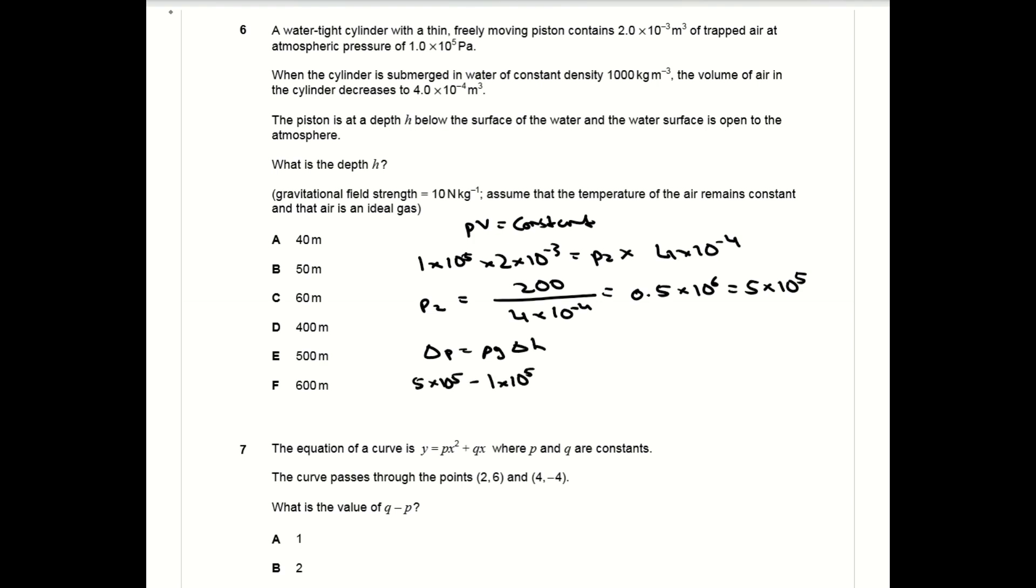So the change in pressure is actually 400,000 pascals because you still have the 100,000 pascals from atmospheric pressure, and this gives you a delta h change in height of 40 meters, which is A.